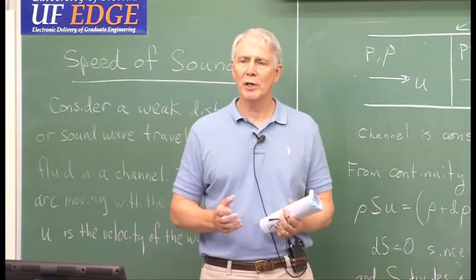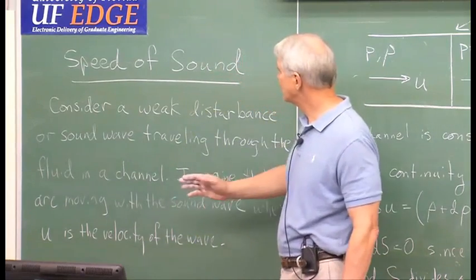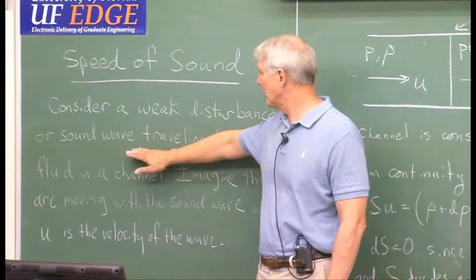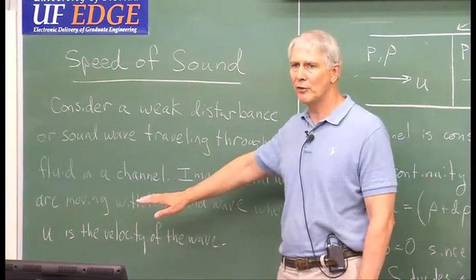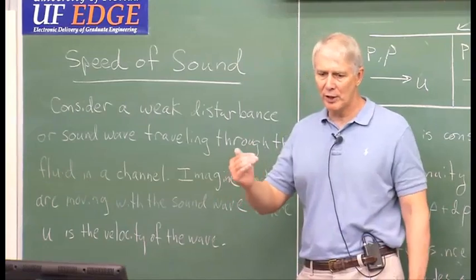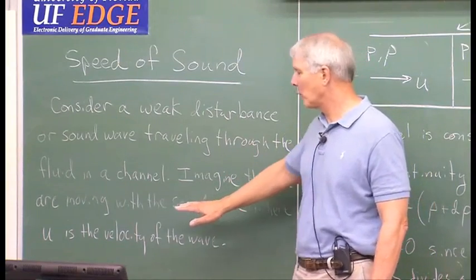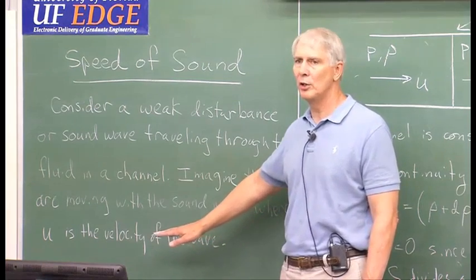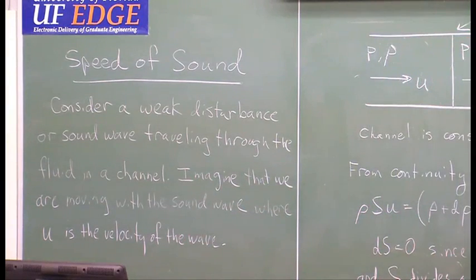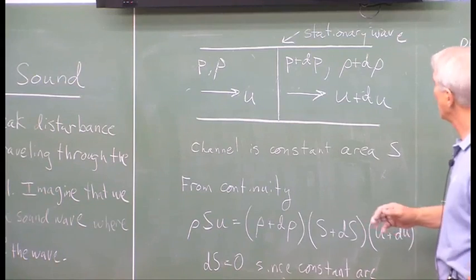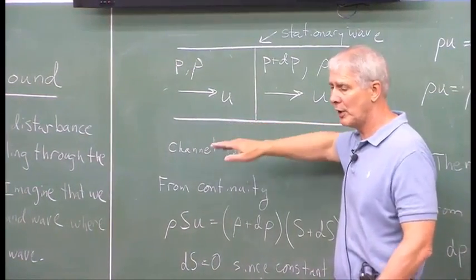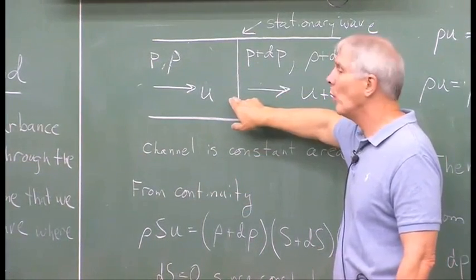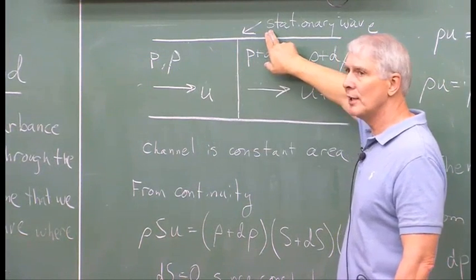Today we want to calculate what the speed of sound is. We're going to start by considering a weak disturbance — we consider a sound wave a weak disturbance — traveling through a fluid in a channel. This could be a real physical channel or an imaginary channel with boundaries that don't really exist. Now, imagine that we're going to move with the sound wave, where the sound wave is moving at the speed of sound — we'll call that u. So we're riding on the sound wave. If we go over to this board, I've drawn this channel, and we're going to ride along with the wave. To us, it looks like a stationary wave.